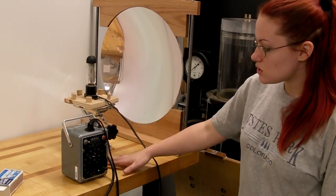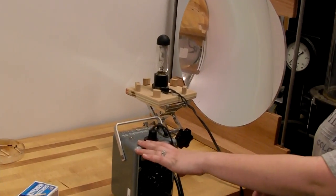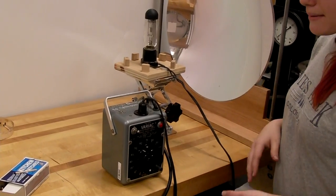So the first step is to grab our 1200 watt light bulb, attach it to a variac so we can control the amount of output for this lamp.